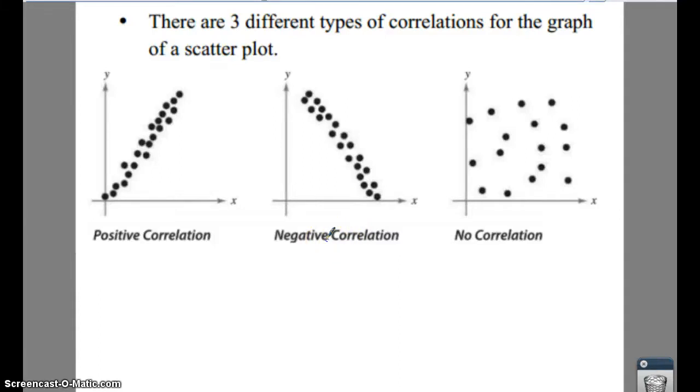Anytime you have scatter plots you have three different kinds of correlations. Correlations are how your data respond to each other, or how they're related to each other.